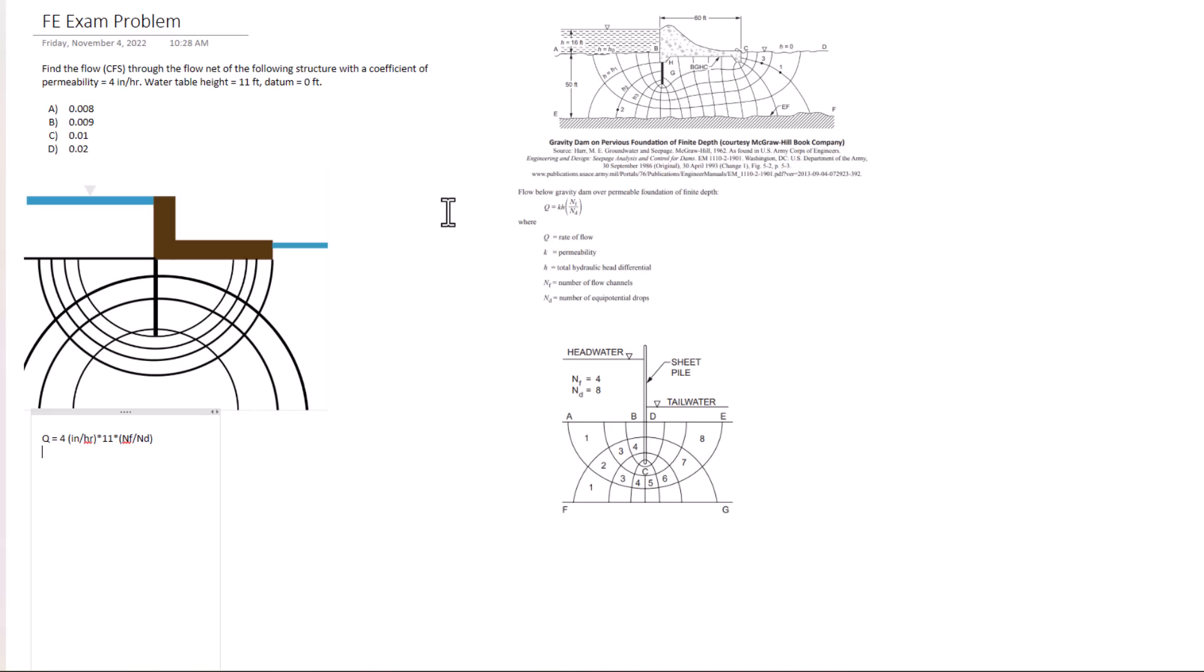So first I want to convert four inches per hour into feet per second. So four divided by 12, that's 0.333 feet per hour, and now I want to do feet per second so we're going to do that divided by 3600 for the conversion. That's going to equal 0.0001.